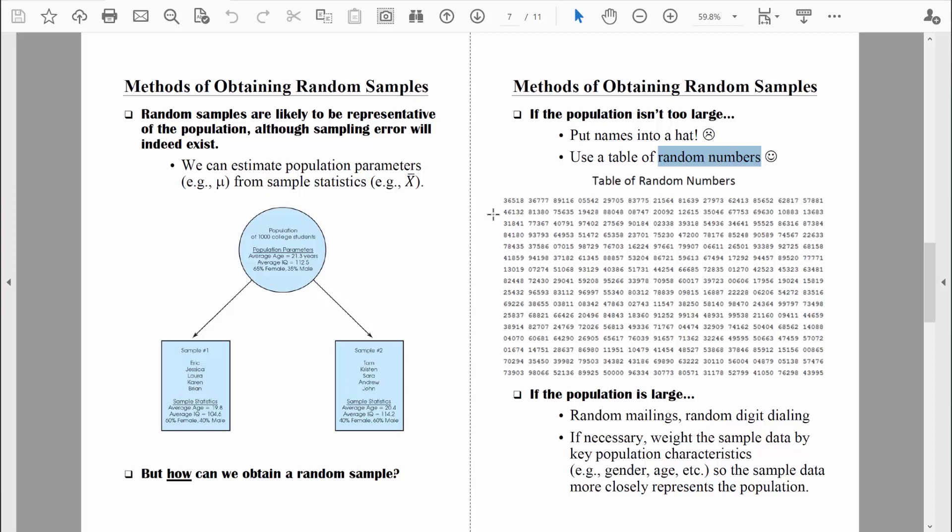Don't forget what the goal is here. We want to give every single person in the population an equal opportunity of being selected for our sample. So let's go through an example using this table that we see right in front of us. We'll keep the example relatively small scale just so we can get through it relatively quickly.